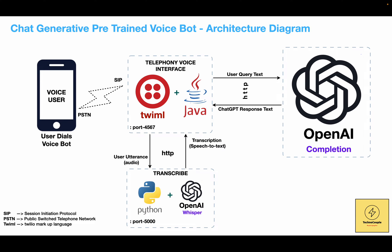On a high level, when a user dials into our application, the caller's utterance — which is an audio stream — is converted to text using a transcription service, which is nothing but speech-to-text conversion. This user utterance text is sent to the ChatGPT API, which responds according to the user input. We then convert this response text to audio and play it back to the caller. The architecture diagram here talks about the various components and APIs used to achieve this functionality.